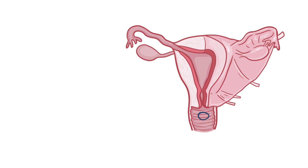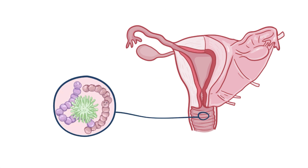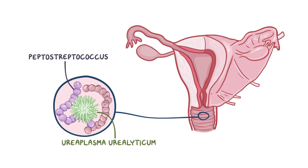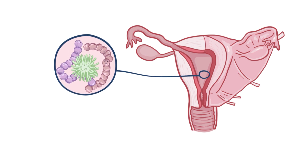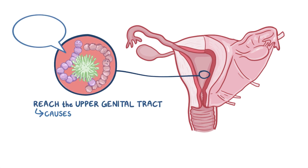Normally, there are many species of bacteria living in the female's lower genital tract, and this is called the normal flora. These include Ureaplasma urealyticum, Peptostreptococcus, and group B Streptococcus. Under normal conditions, these bacteria live there happily without causing any harm. However, if they reach the upper genital tract, they can cause an infection like endometritis if they make it to the uterus.